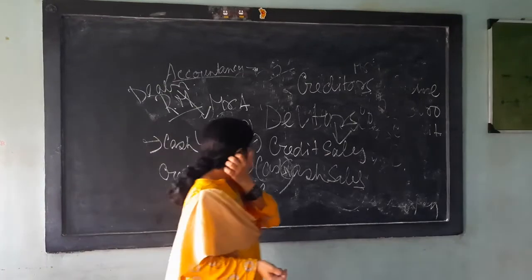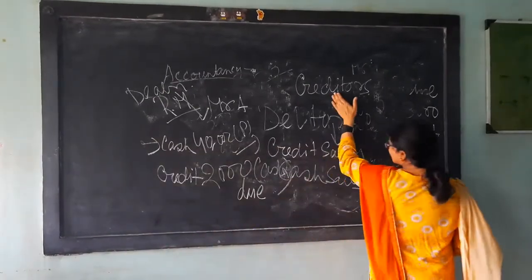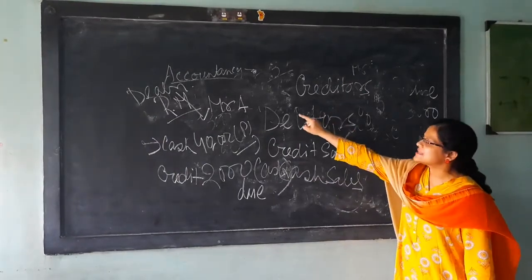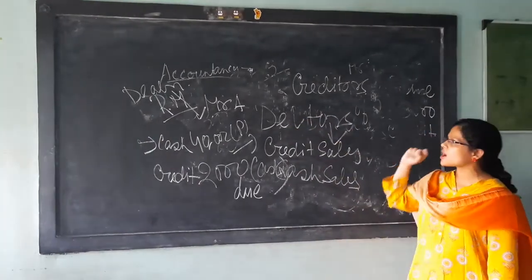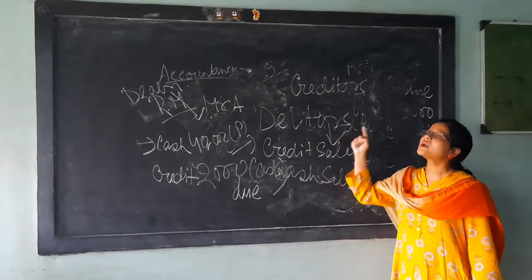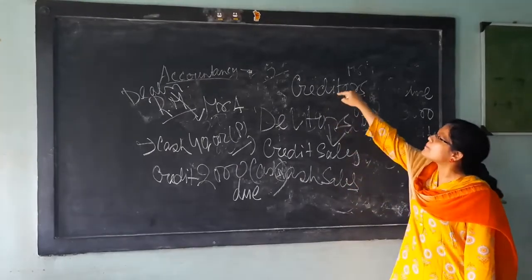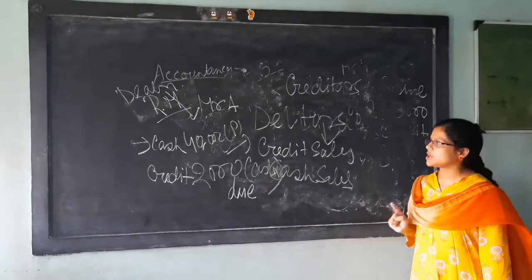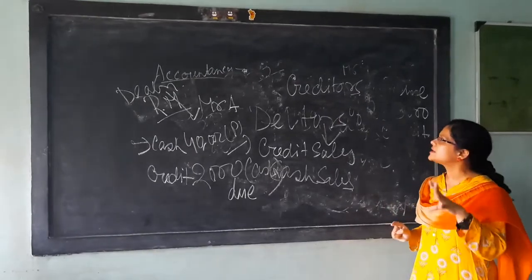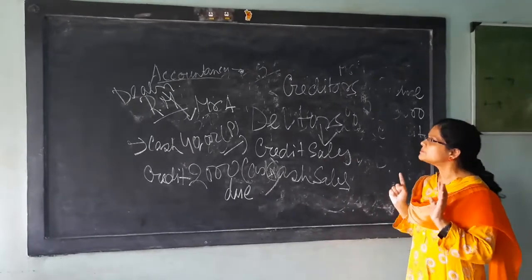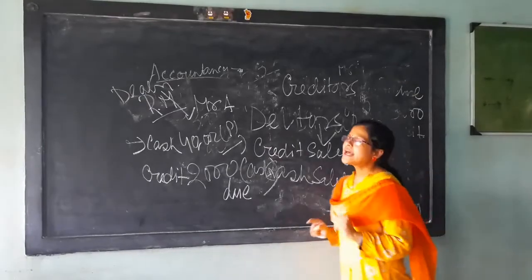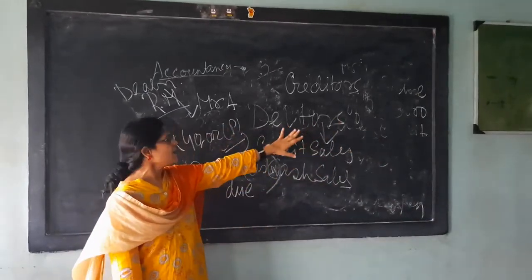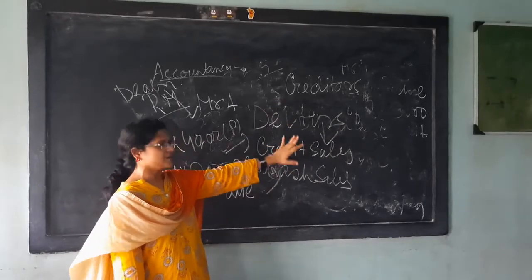To whom I have purchased the goods, they are known as the creditor of the business. This is the liability of the business. Because the business man or the business owner has to pay the amount to the particular person after a certain period of time. So creditors are the liability of the business. And the debtors, they are the asset of the business. Because from debtors, the money will be realizable after some time.